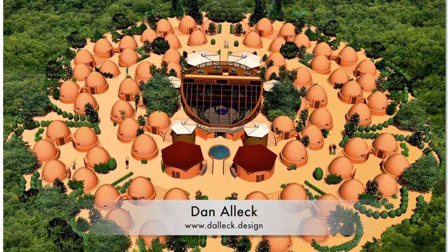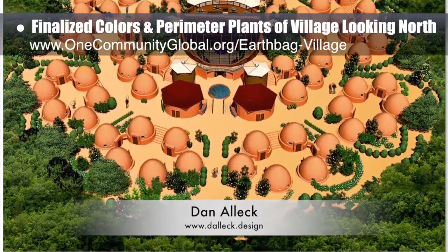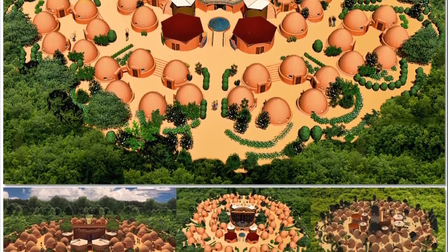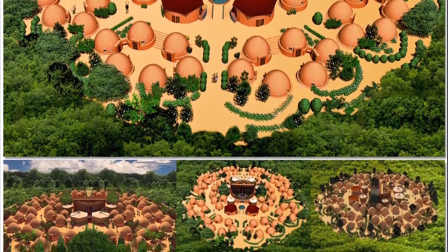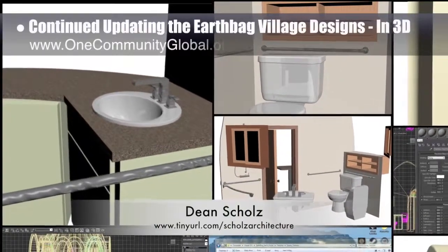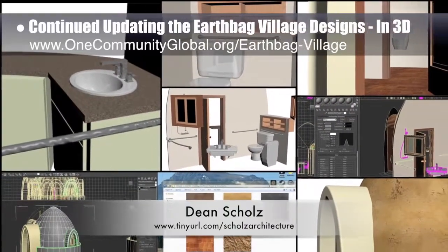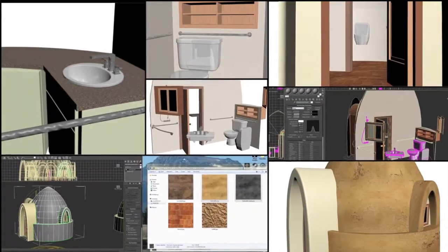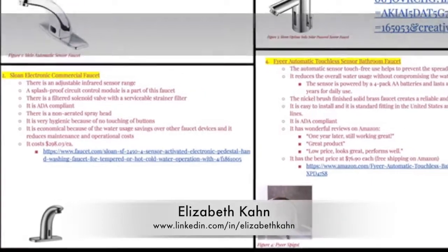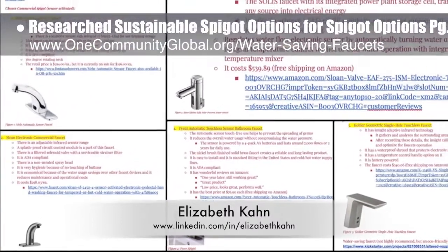Dan Alec, designer and illustrator, completed his 37th week helping with EarthBank village render additions. This week he finalized improving the colors and perimeter plans in the complete village looking north view, adding it to the 3D perspectives image and adjusting all colors for better matching. Dean Schultz, architectural designer, continued on the EarthBank village — this week finishing details for most internal furniture and starting to test textures. Elizabeth Kahn, environmental consultant, completed her 8th week, beginning research on sustainable spigot options for our most sustainable spigots page.